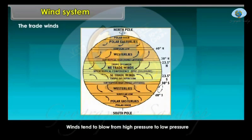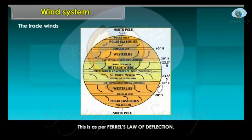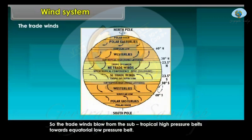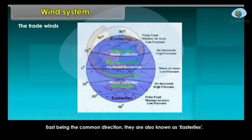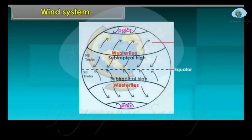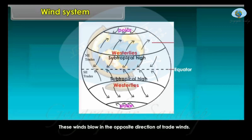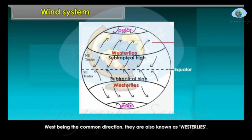The Trade Winds blow from high pressure to low pressure but are deflected to the right in the northern hemisphere and to the left in the southern hemisphere, as per Farrell's law of deflection. So the trade winds blow from the subtropical high pressure belts towards the equatorial low pressure belt. East being the common direction, they are also known as easterlies. In the olden days these winds were useful for traders, which is why they are called trade winds. Anti-Trade Winds blow in the opposite direction of trade winds, from the subtropical high pressure belt towards the subpolar low pressure belt. West being the common direction, they are also known as westerlies.